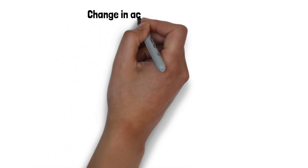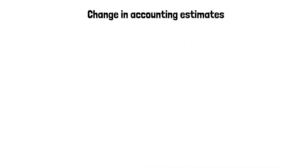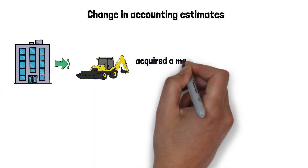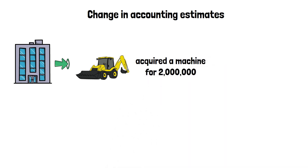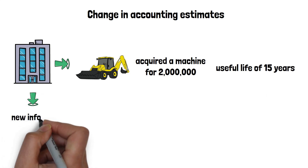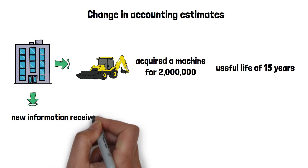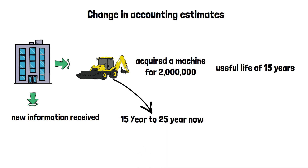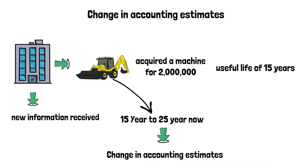Changes in accounting estimates are changes in the valuation of the estimated liabilities as a result of new information received. For example, an entity acquired a machine for 2 million, and the entity's management estimated a useful life of 15 years. However, after 5 years, based on new information provided by the supplier, the company estimates that the useful life should be 25 years instead of 15 years. This is a change in an accounting estimate since the change is the product of new information that the entity received — information that the company didn't have when calculating the initial estimate.